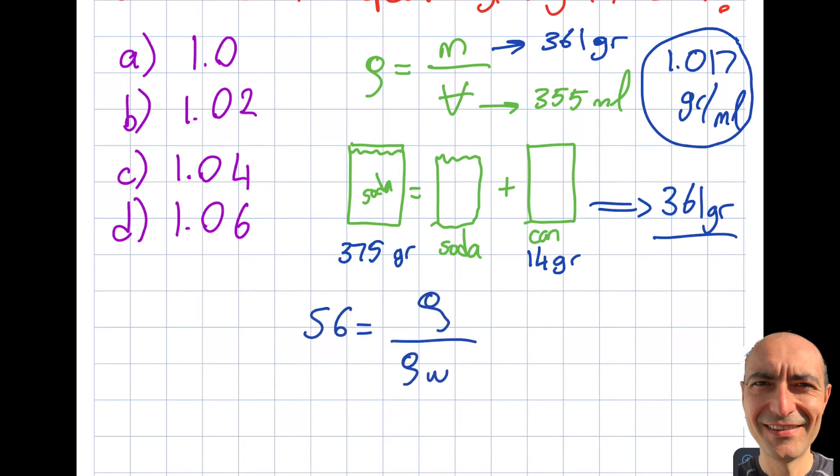So the specific gravity will be equal to density of what I'm dealing with with respect to density of water. And this density of water is given to me as 1000 kilogram per meter cubed. This is again on page 176 of the reference manual, but I need to convert this to gram per ml.